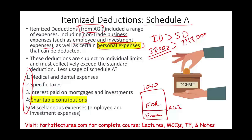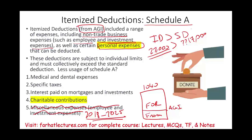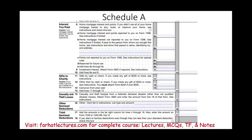Itemized deductions are being used less and less because the miscellaneous expense deduction is suspended from 2018 to 2025. The government also increased the standard deduction overall. In this session, we're going to be looking specifically at gifts to charities.